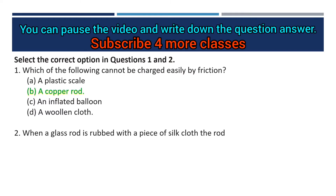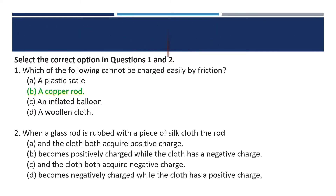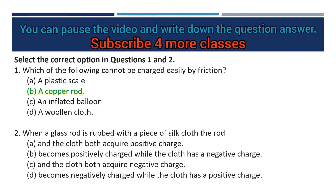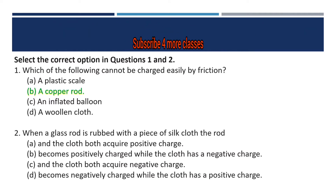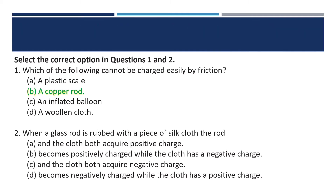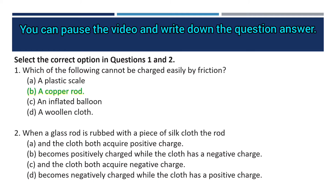The next question: when a glass rod is rubbed with a piece of silk cloth, what happens? The options are: both acquire positive charge; the rod becomes positively charged while the cloth has a negative charge; both acquire negative charge; or the rod becomes negatively charged while the cloth has a positive charge. The answer is B — the rod becomes positively charged while the cloth has a negative charge.